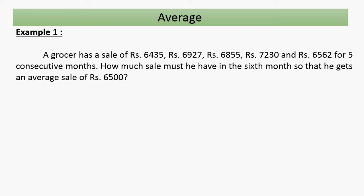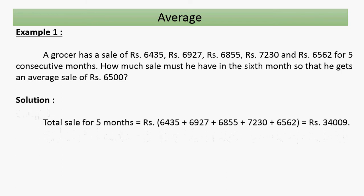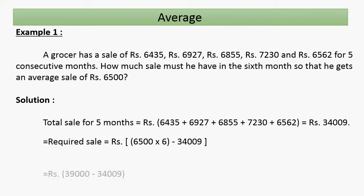The user has given five months' sales and we have to find the sixth month's sale to get an average of 6500 each month. Total sale for five months: 6435 + 6927 + 6855 + 7230 + 6562 = 34009. The required total for six months at an average of 6500 is 6500 × 6 = 39000.